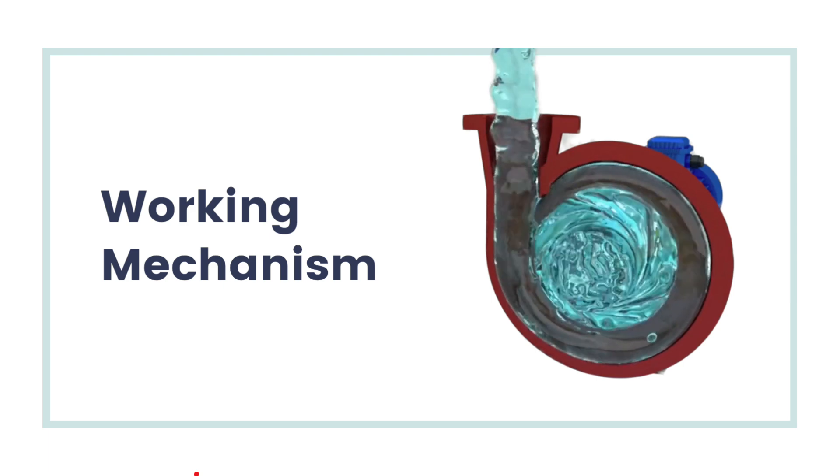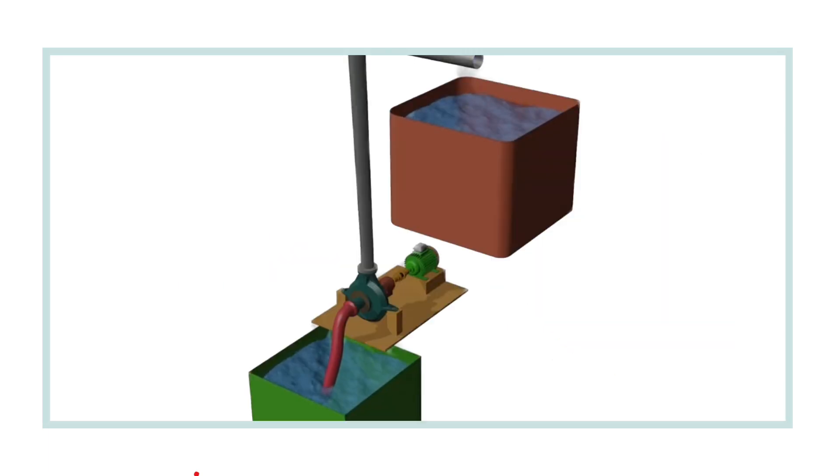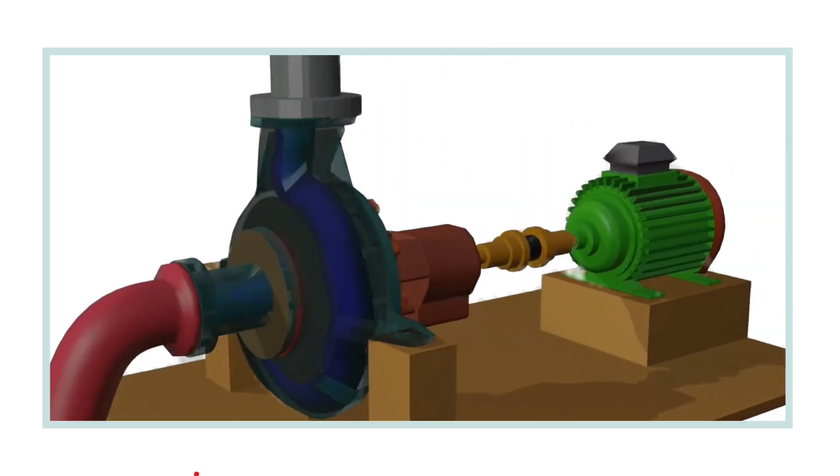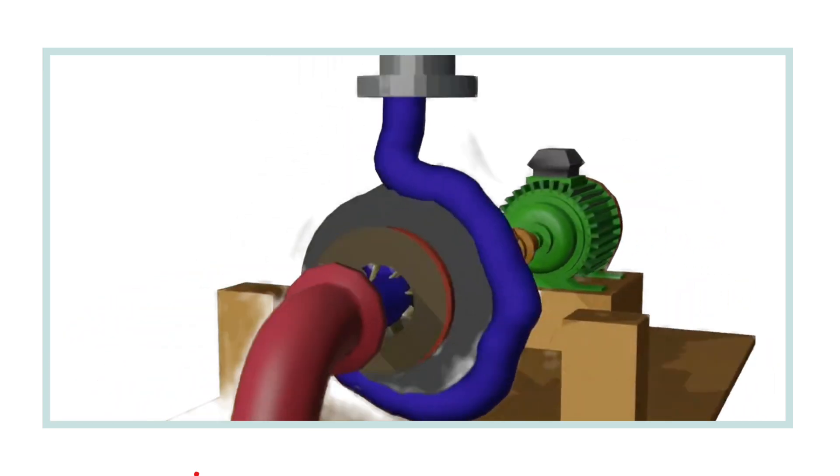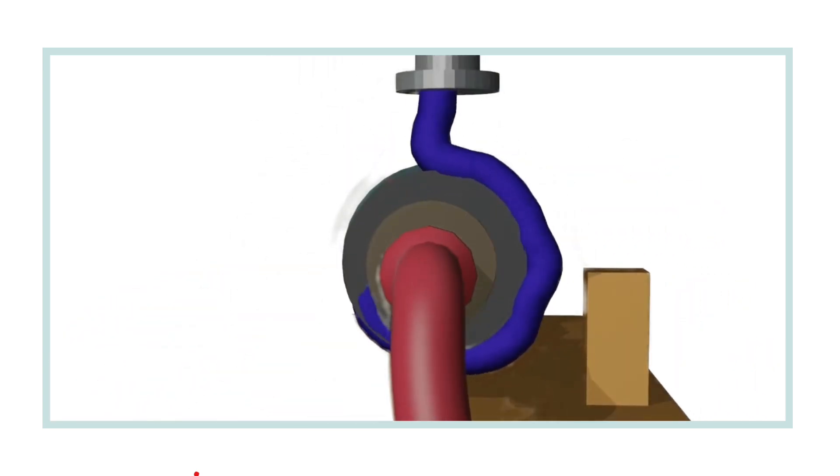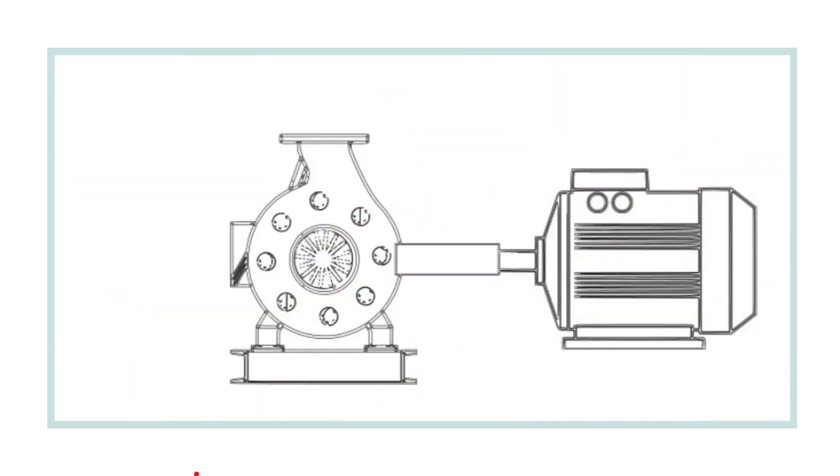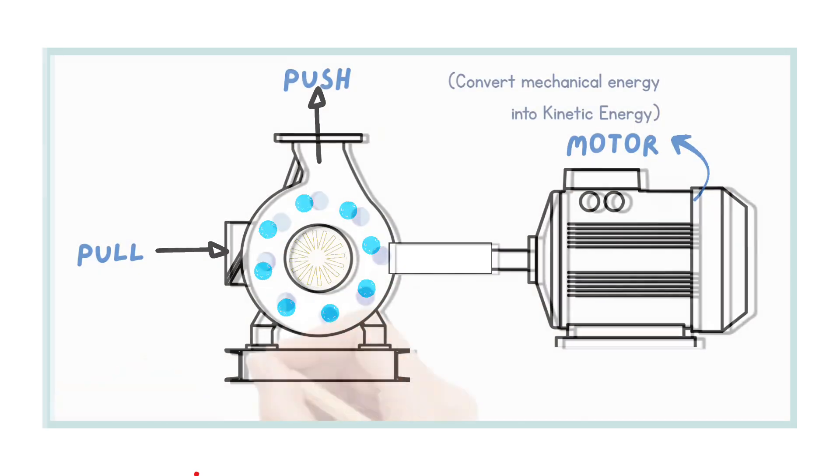As velocity increases, the fluid then enters the volute casing where the velocity is converted into pressure energy. Finally, the higher pressure fluid exits through the delivery pipe.